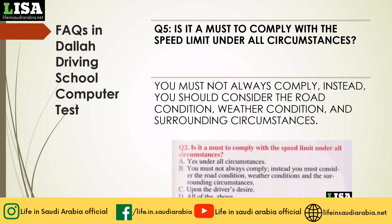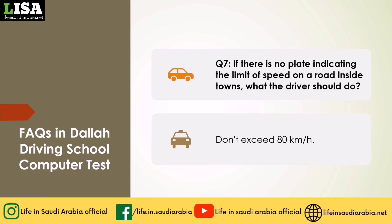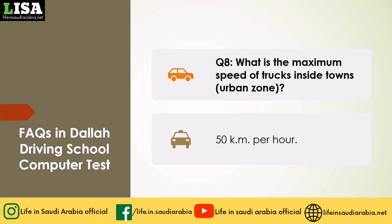Q5: Is it a must to comply with the speed limit under all circumstances? Answer: You must not always comply — instead, you should consider the road condition, weather condition, and surrounding circumstances. Q6: What is the maximum speed of small vehicles inside town's urban zone? Answer: 80 km per hour. Q7: If there is no plate indicating the speed limit on a road inside towns, what should the driver do? Answer: Don't exceed 80 km per hour. Q8: What is the maximum speed of trucks inside town's urban zone? Answer: 50 km per hour.